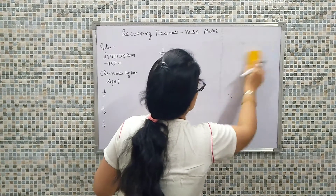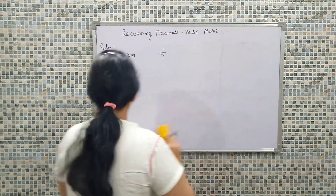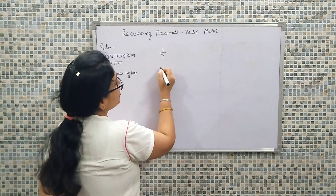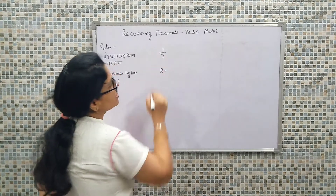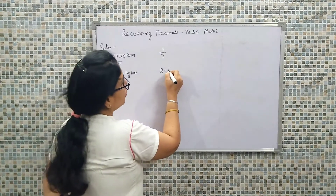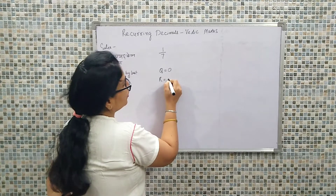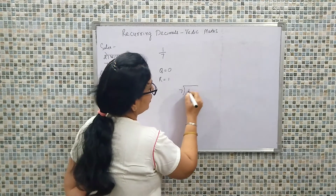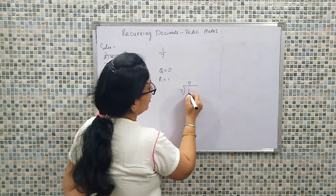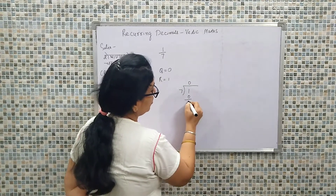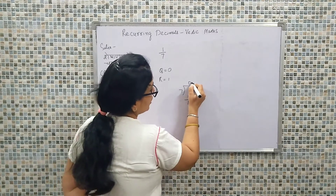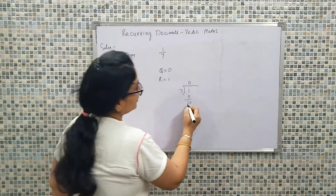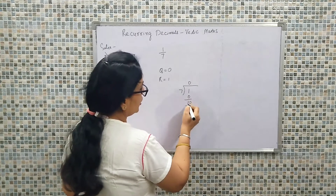So we will start with the first example, that is 1 upon 7. When we talk about 1 upon 7, logically, if we define this — 1 divided by 7 — it will not be divided. So our quotient will be 0 and our remainder will be 1. Because if we are dividing 1 by 7, the quotient is 0 and the remainder is 1. Now, what we will do — logically, we will put a decimal. After we put a decimal, we add 0. So our next value becomes 10.